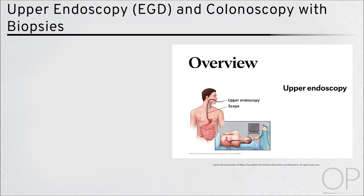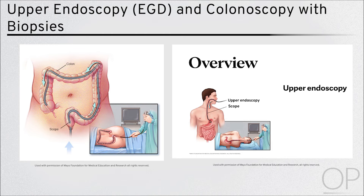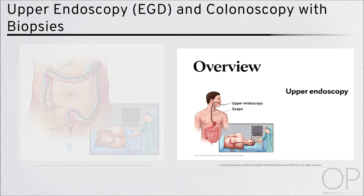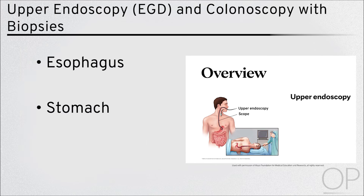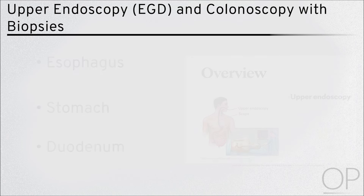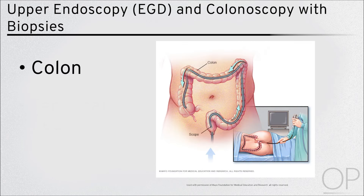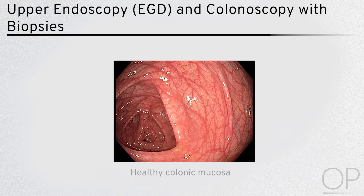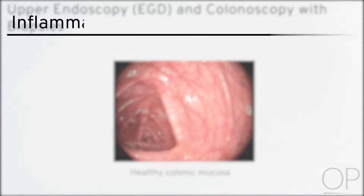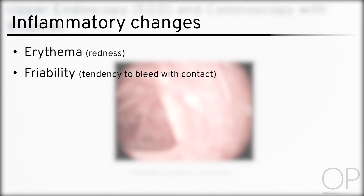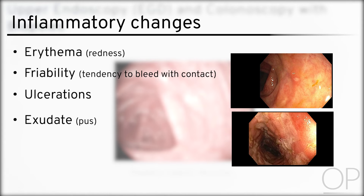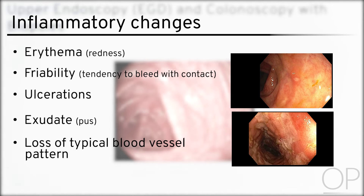Upper endoscopy (EGD) and colonoscopy with biopsies is the gold standard testing for IBD diagnosis. EGD allows for evaluation of the esophagus, stomach, and the first part of the small intestine, called the duodenum. Iliocolonoscopy allows for evaluation of the colon and the terminal ileum. The endoscopist will look for inflammatory changes suggestive of IBD, which can include erythema or redness, friability or tendency to bleed, ulcerations, exudate or pus, and loss of typical blood vessel pattern. They will also take small pinches of tissue, called biopsies, which a pathologist will look at under a microscope. Ultimately, this allows for characterization of the location and severity of intestinal inflammation, which helps with treatment selection.